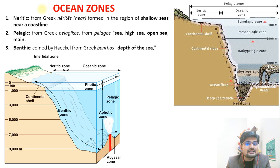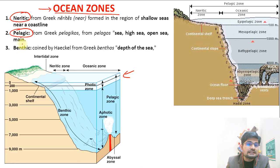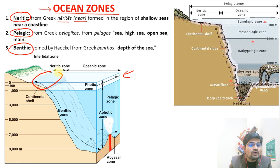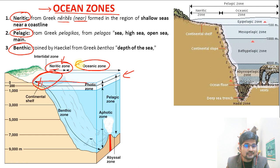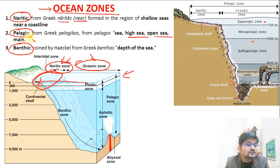We must understand the zonations in the ocean. Observing this image, several zones are present. The first is the neritic zone — from Greek neretis meaning 'near' — which is the shallow water zone near the continental surface and shore area, part of the photic zone where light penetrates. Away from the neritic zone is the oceanic zone, also called the pelagic zone, which refers to the high sea or open sea away from land.